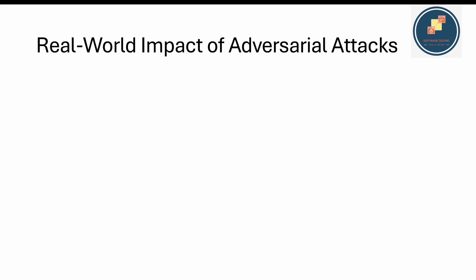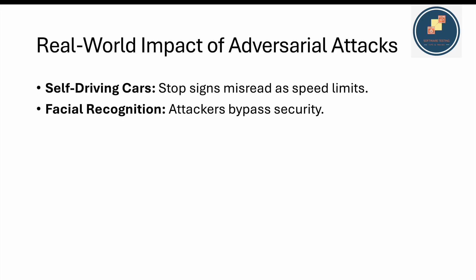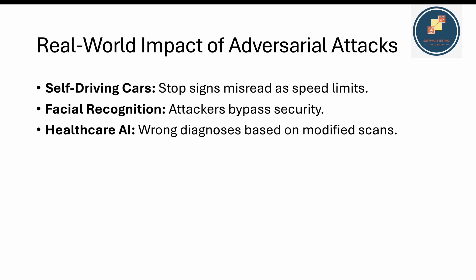That is one way you can fool AI. Let's talk about the real-world impact of adversarial attacks. In self-driving cars, stop signs can be misread as speed limits. In facial recognition, attacks can bypass security — attackers change some pixels around the nose or eyes so the system treats it as a different person, essentially allowing someone to impersonate another identity.